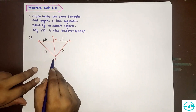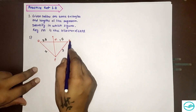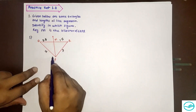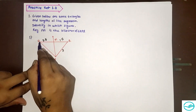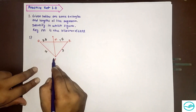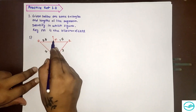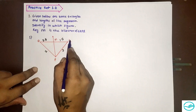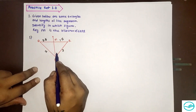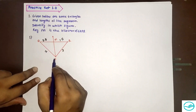By the angle bisector property, PQ divided by PR should equal QM divided by MR. That means if PQ divided by PR is equal to QM divided by MR, then the angle is bisected. But first we need to check whether the ratio of PQ and PR equals the ratio of QM and MR.